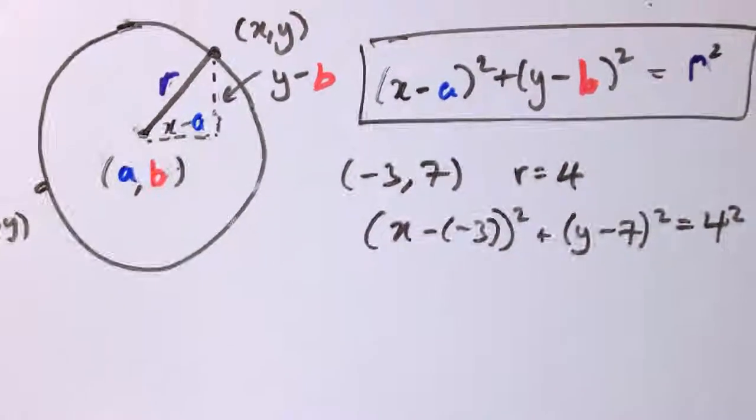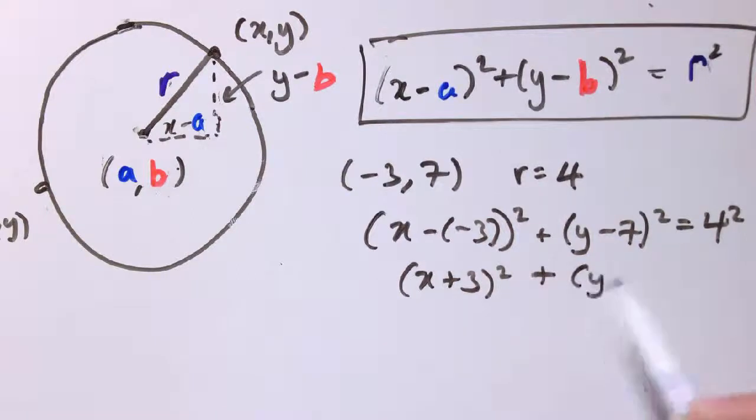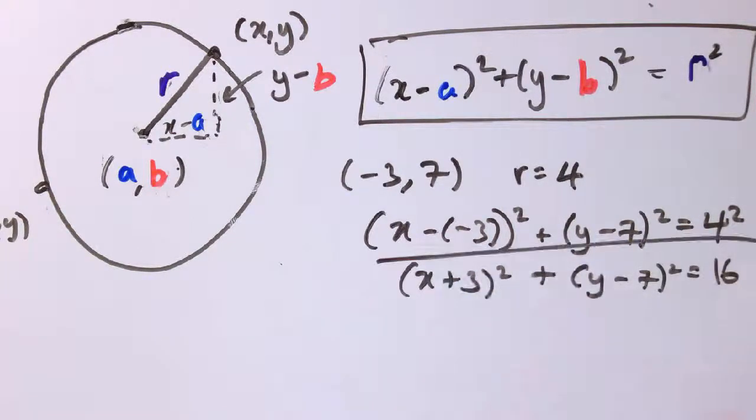Now just plugging these values into the formula. So this is x minus minus 3. That's x plus 3 squared plus y minus 7 squared equals 16.